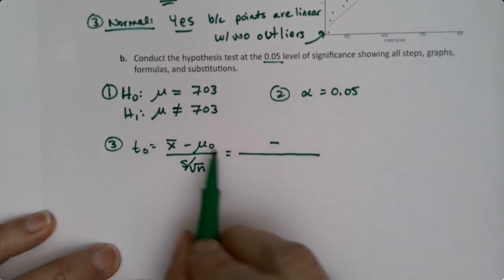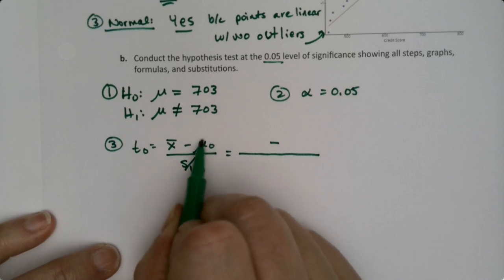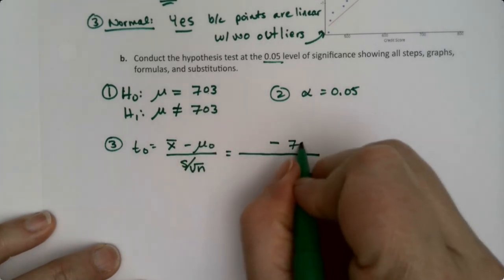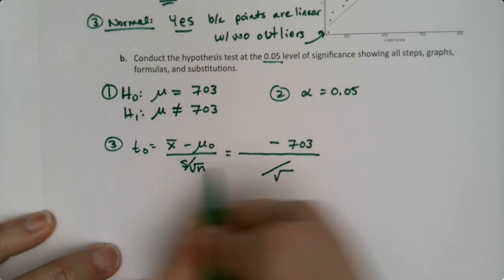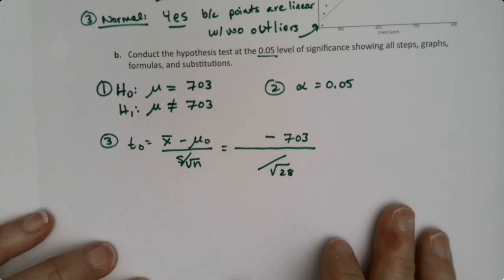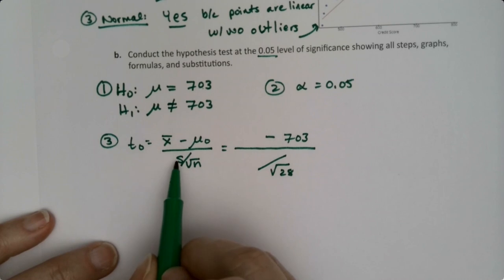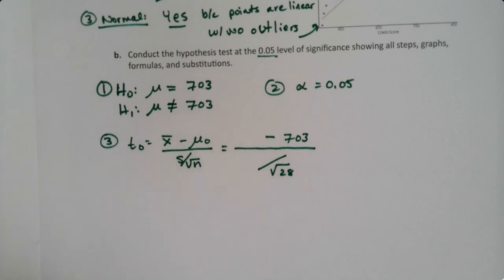Now the only thing I know so far, well I know mu 0. Mu 0 is 703. And I know that my n on the denominator is 28 because I counted it myself. But I don't know x bar and I don't know s. But we learned how to find those in chapter 3.